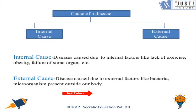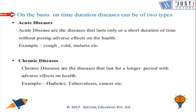Diseases can also be classified according to time. One classification is acute and the other is chronic. A disease which appears for a short duration is called an acute disease — for example, cough, cold, fever, etc. A disease which lasts for many years is called a chronic disease. Some chronic diseases may last for the entire life — for example, diabetes, tuberculosis, hypertension, etc.